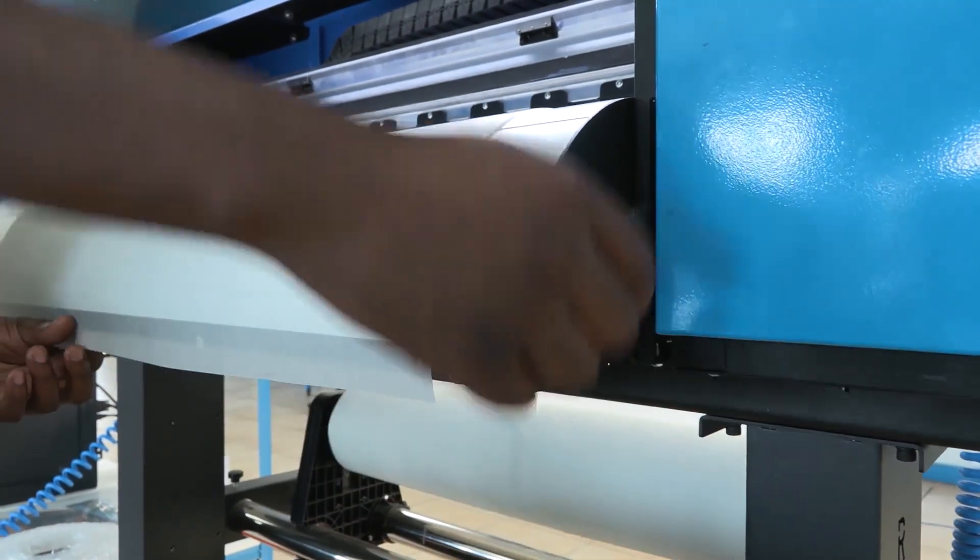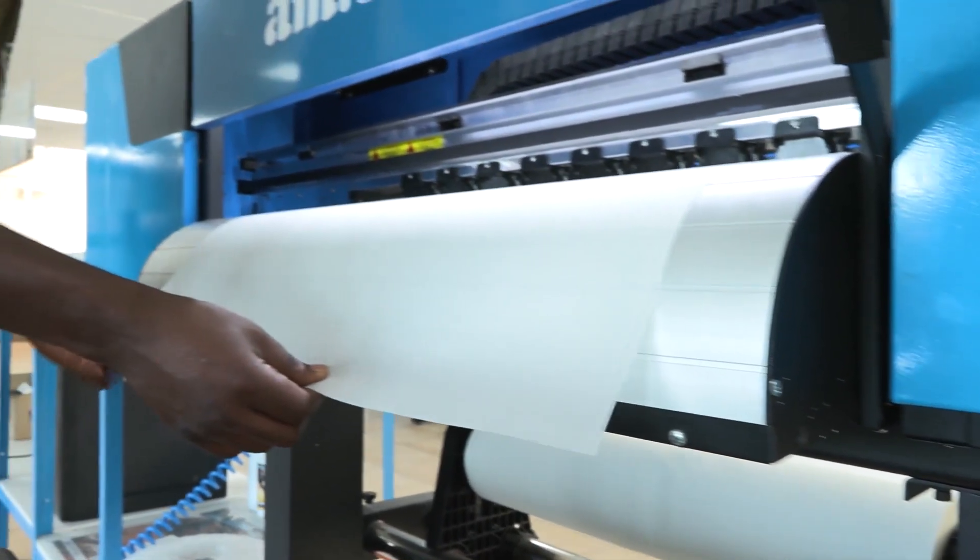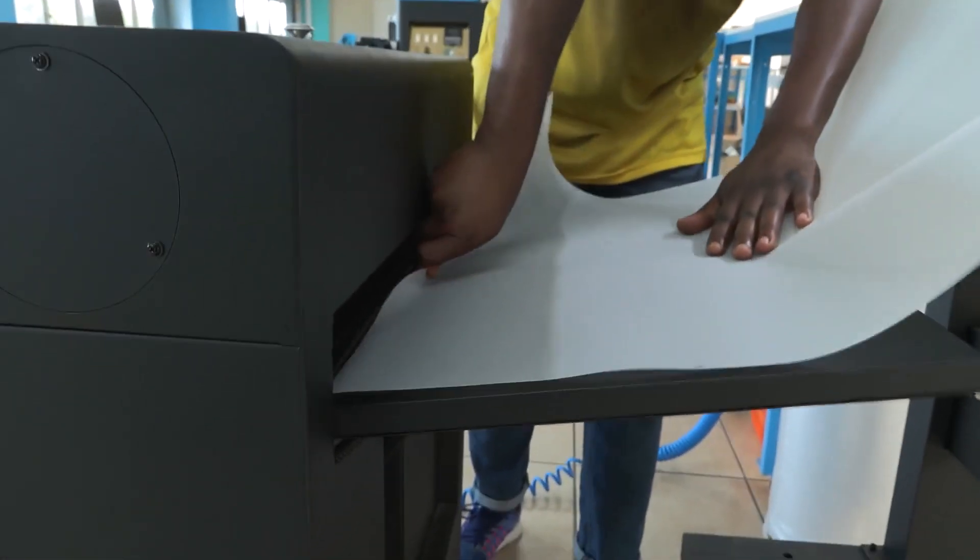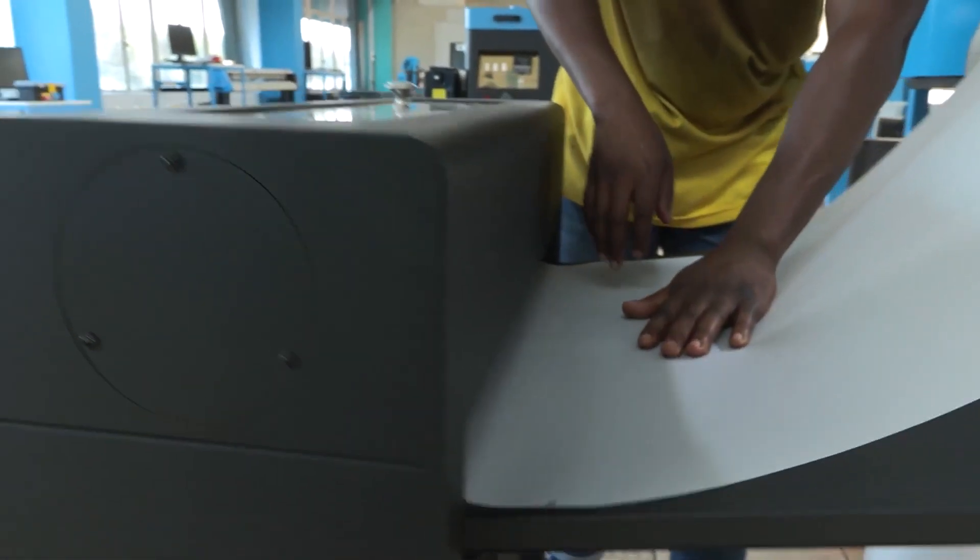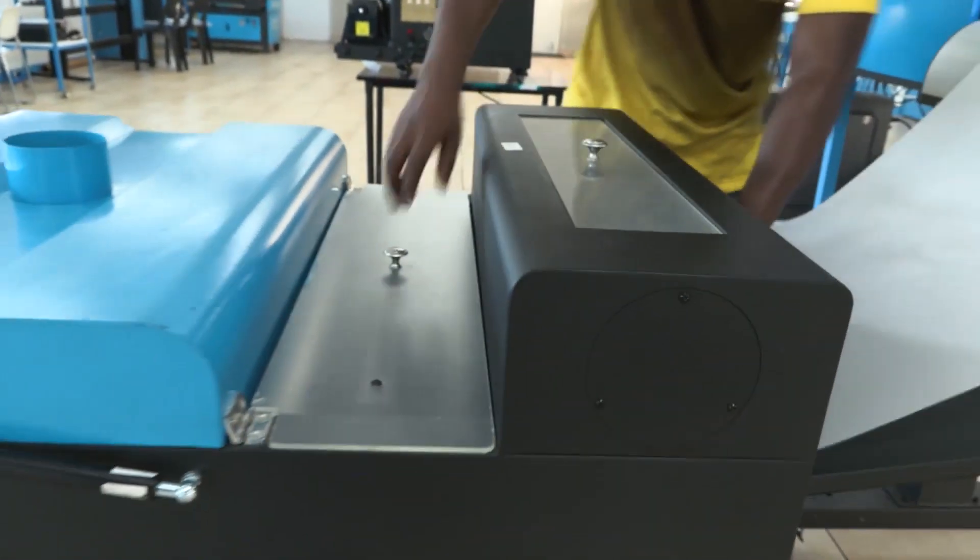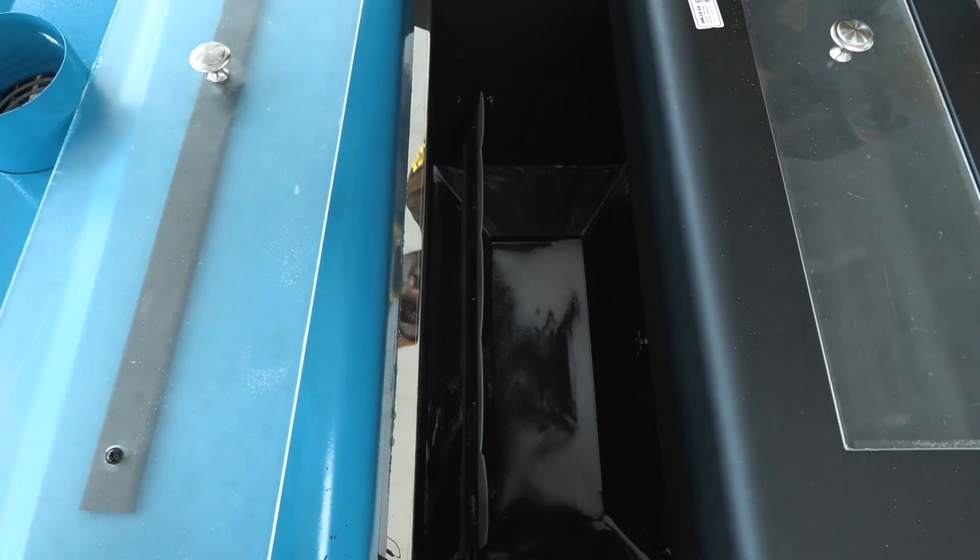So to start with I'm going to feed the DTF film through the shaker then feed it through over the preheating plate past the unit and through the oven.